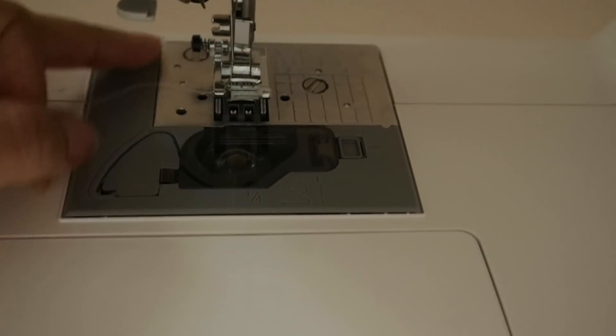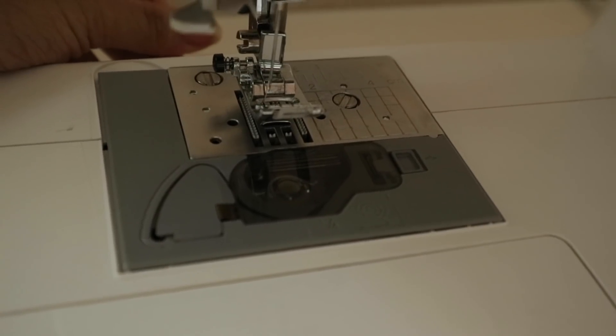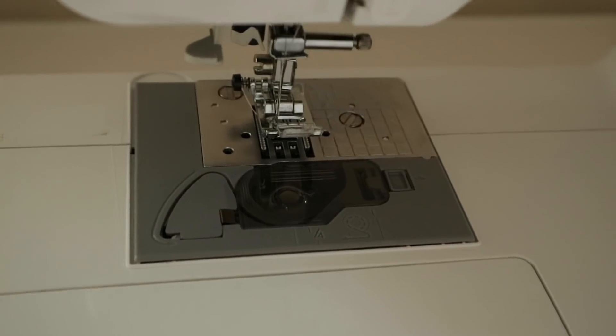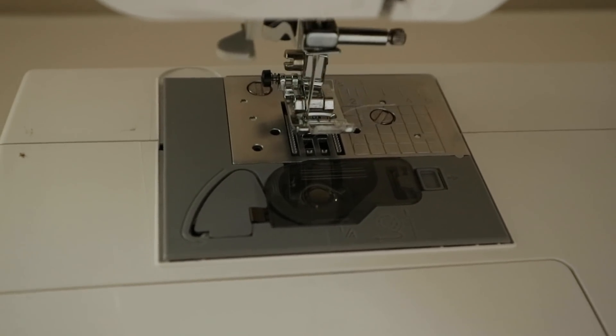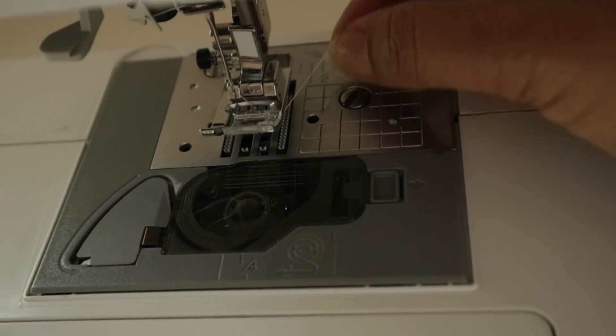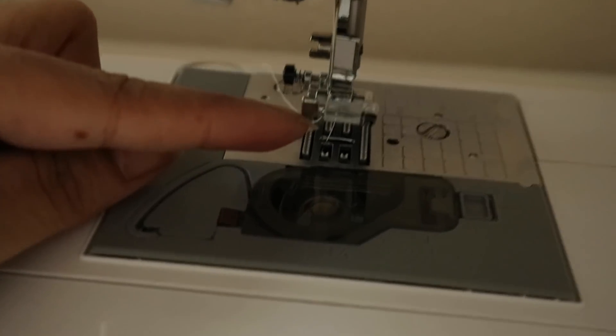So now we're going to take that bobbin that we created and put it into the bobbin case. I'm going to first position my thread to the back of my machine. And the last step is to catch my bobbin. So I insert the needle, which loops your top thread around your bobbin and pulls it out from the base.